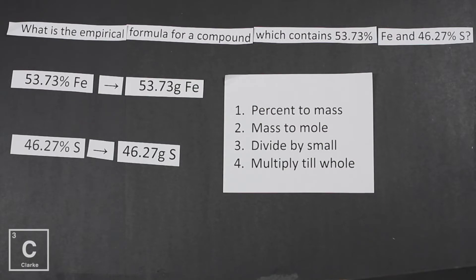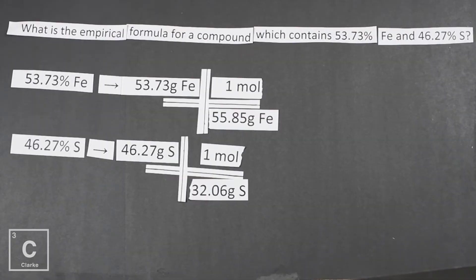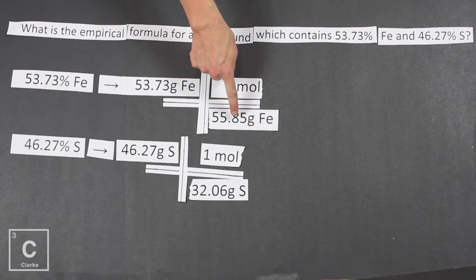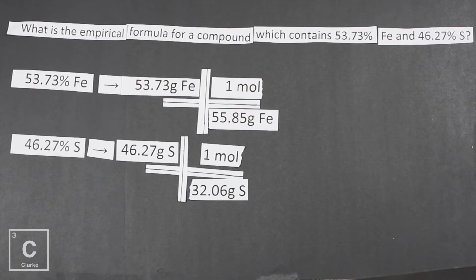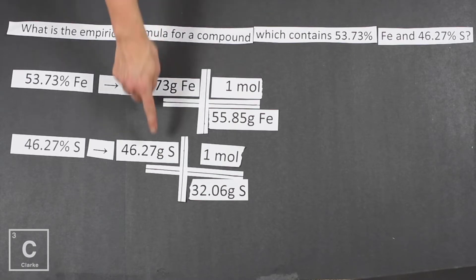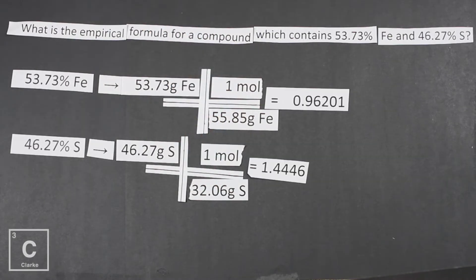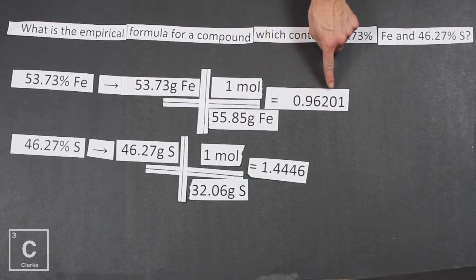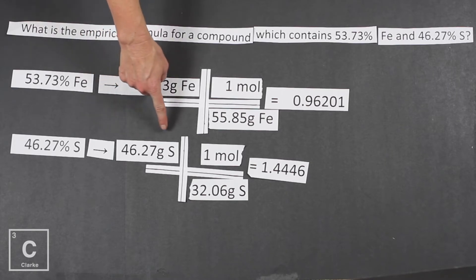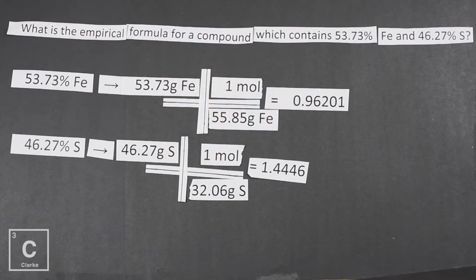Now we go mass to mole — we convert mass to moles using a little dimensional analysis with the molar mass of each element. We have grams on top, so we put the molar mass on bottom. The molar mass of iron from the periodic table is 55.85 per mole. For iron: 53.73 grams divided by 55.85 gives 0.96201. For sulfur, 46.72 grams divided by 32.06 gives 1.44600. I purposely did not round — we need lots of decimal places.